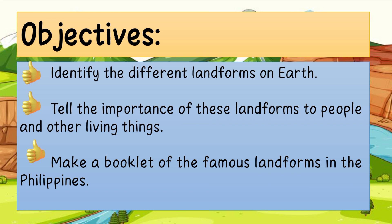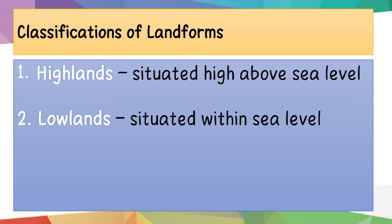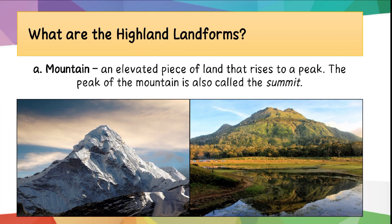We will also make a booklet of the famous landforms in the Philippines. We have two classifications of landforms: highland and lowland. Highland is situated high above sea level, while lowland is situated within sea level.